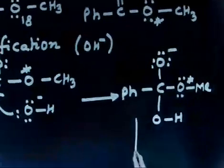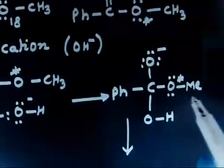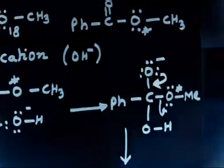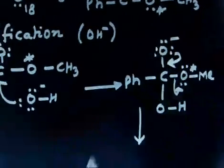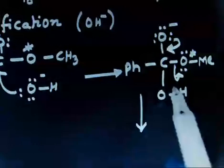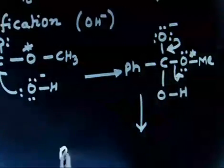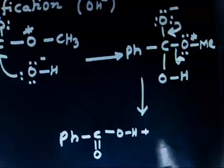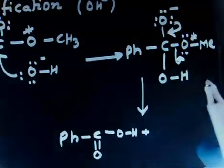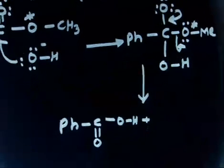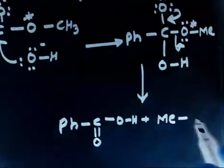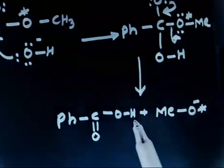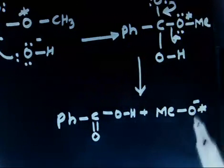Now, in the next step, OMe is a leaving group, so I have to expel this leaving group. This electron pair comes here and OMe departs. So you will have PhC(=O)OH on one side, and MeO⁻ on the other. The oxygen attached to Me is the labeled oxygen — so MeO⁻ carries the labeled oxygen. This MeO⁻ minus can take H⁺ from the carboxylic acid.